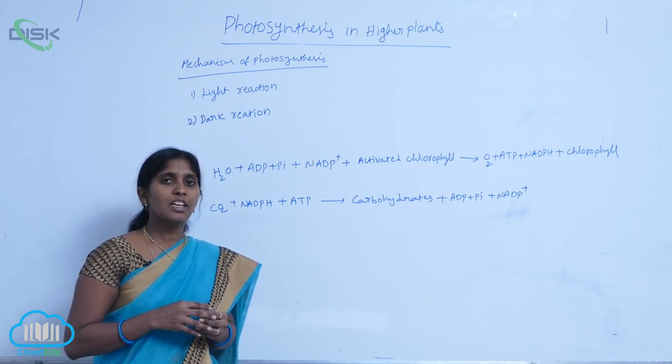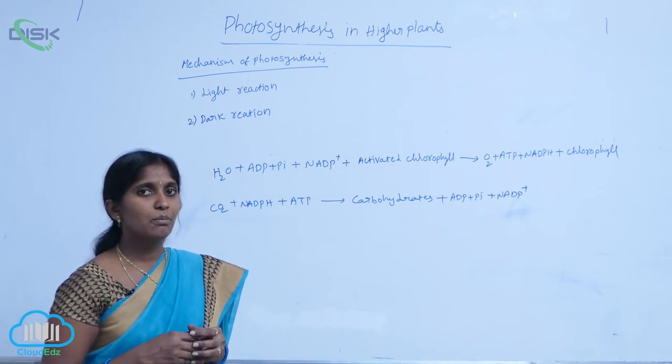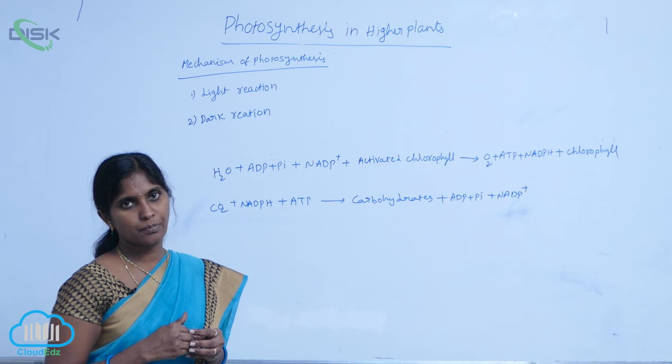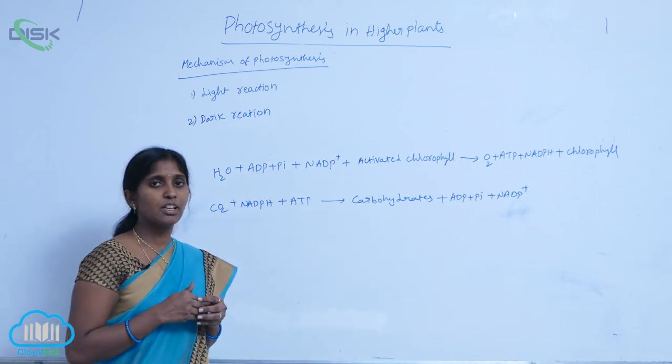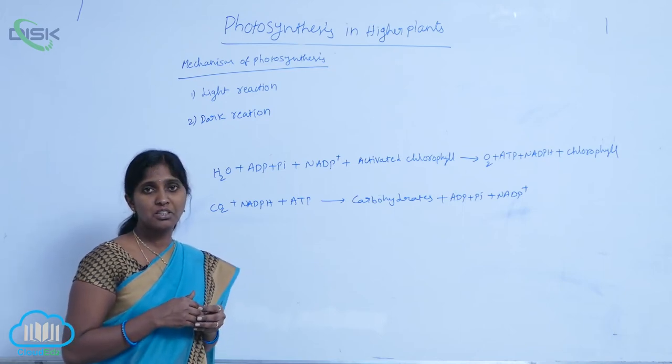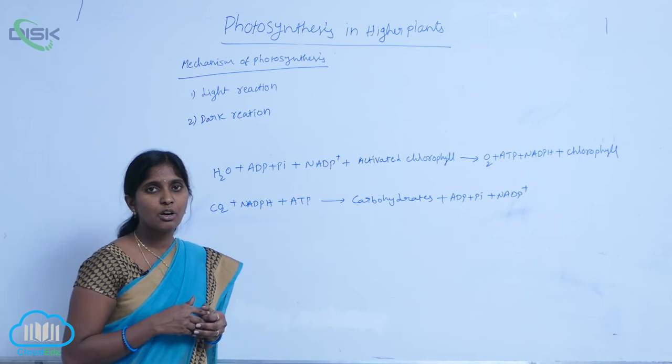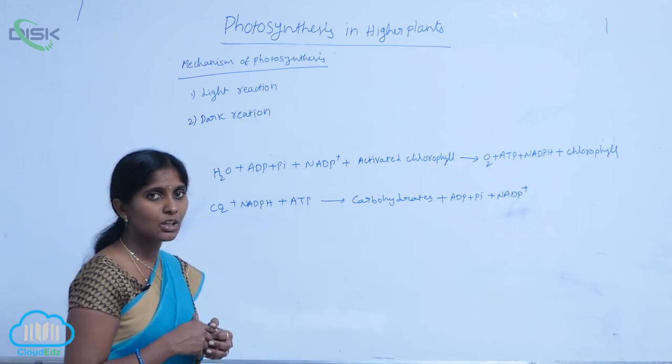The energy required for photosynthesis is derived from the light phase only. The light reaction occurs at the grana of chloroplast, in the thylakoids.